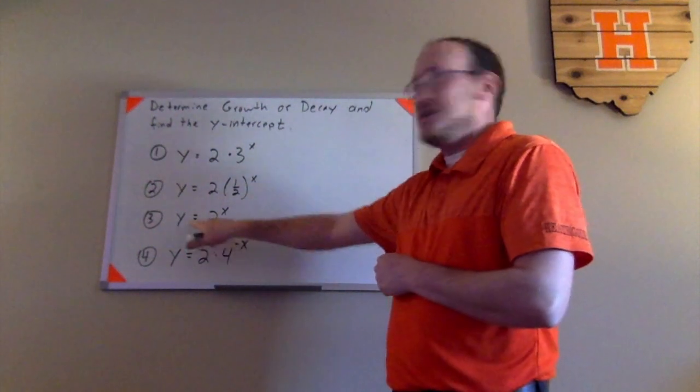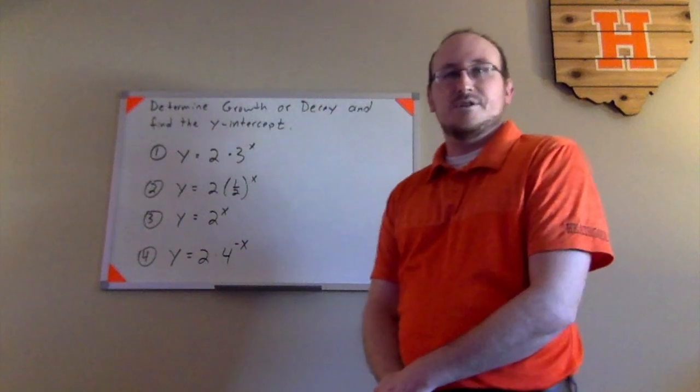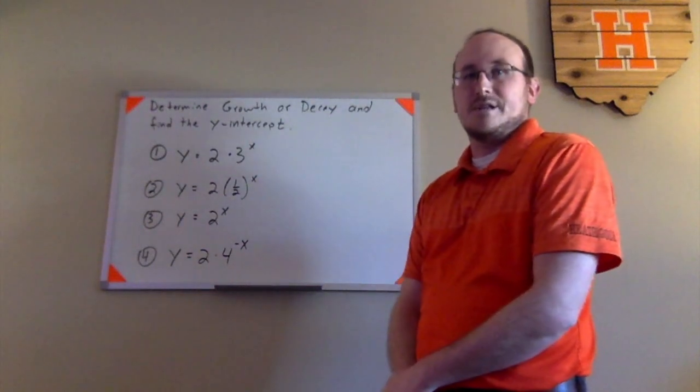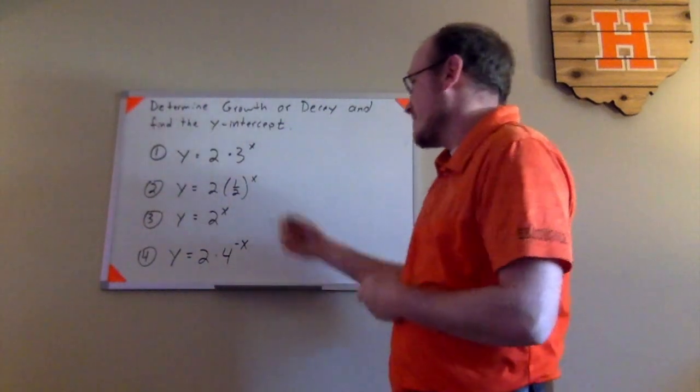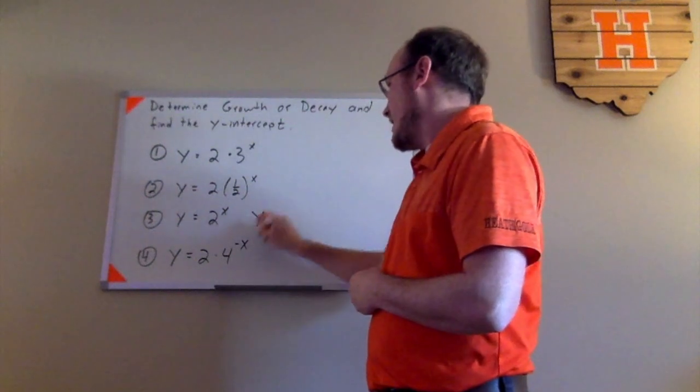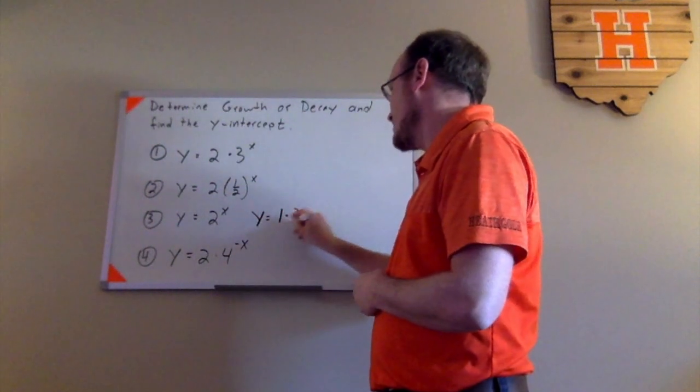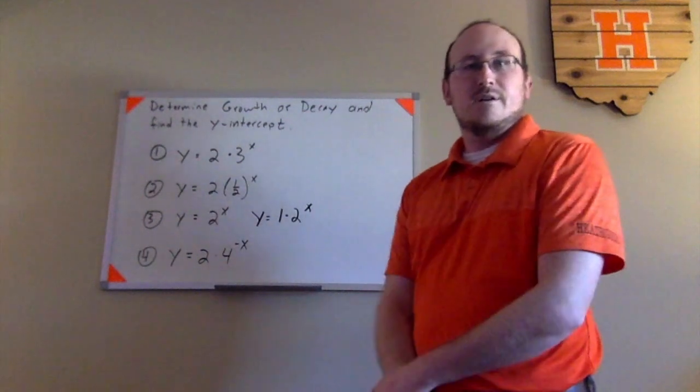But I don't see an initial value there. A lot of times students will miss this question. They'll want to say it's 0. It's actually not 0. I could rewrite this as y equals 1 times 2 to the x. That would be equivalent to that right there.